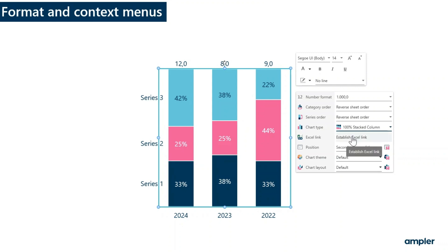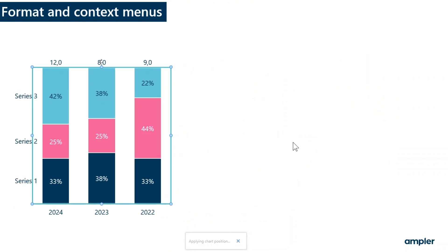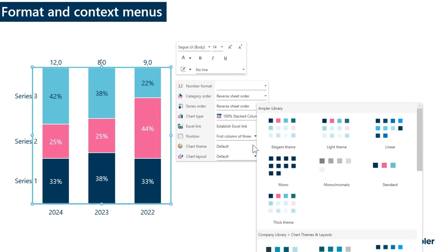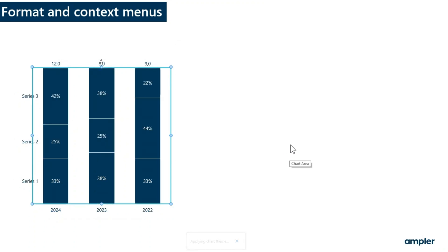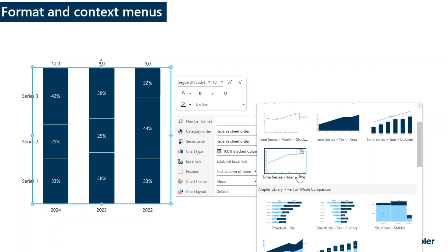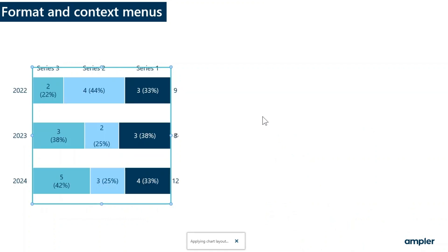You can establish an Excel link — we'll be looking at that in a later video. You can change the position of the chart, selecting from the predefined positions. You can apply a theme from predefined themes from the library. And finally, you can change the chart layout from one of the AmpliChart library versions, or to one of the predefined layouts you have saved in your library. More on both themes and layouts in a later video.